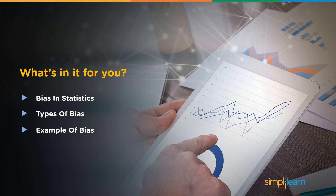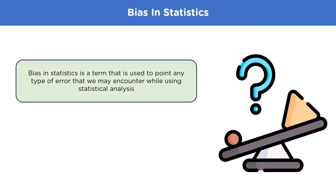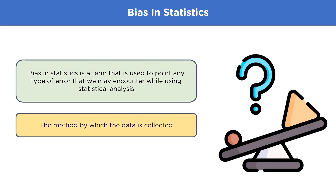Without further delay, let's begin. Bias in statistics is a term used to refer to any type of error that we may find when using statistical analysis. The reasons for this bias may be that the method by which the data is collected is faulty, or the way a question is phrased may not be accurate.